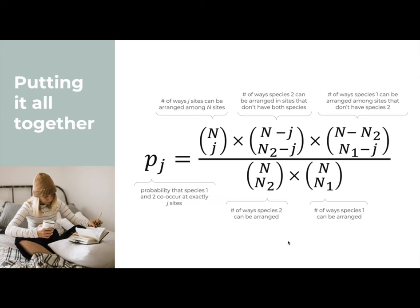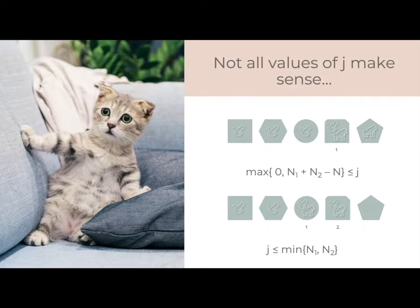Now we can combine our reformulated numerator and denominator to get the mathematical equation for Pj. When we calculate Pj for all possible values of j, we end up with a probability distribution. But first, let's talk about what the possible values for j actually are.